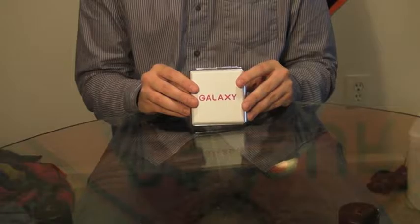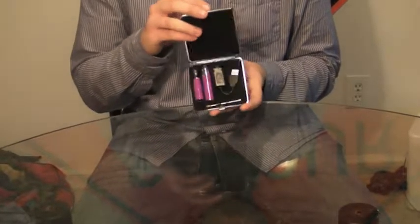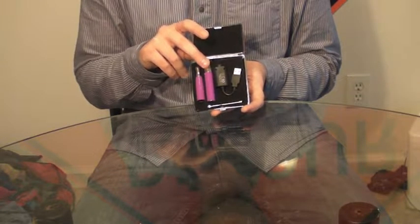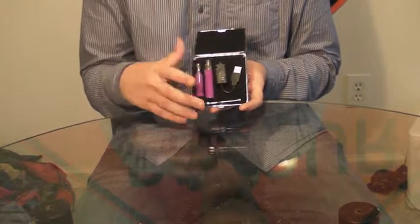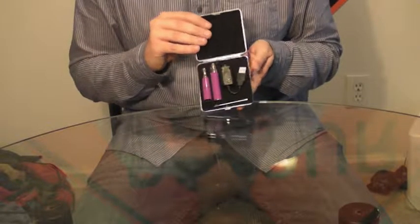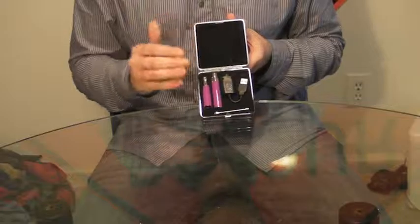Alright, so this is what the kit is going to look like when you buy the Galaxy kit. Now pop it open, and inside you'll have your tank, your battery, a charger, and a dabber, as well as an instruction manual, which I have currently misplaced.